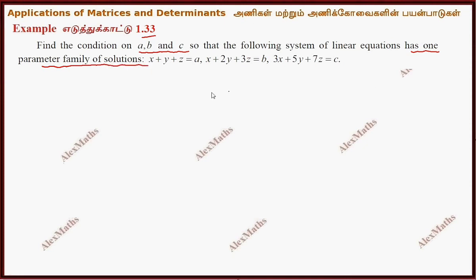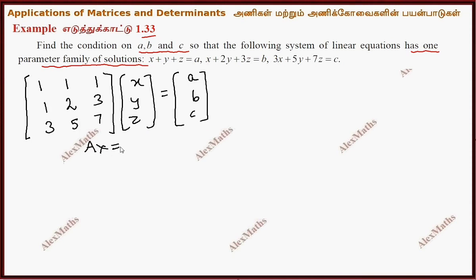This is the matrix product. First, the coefficient of XYZ is the matrix: 1, 1, 1; 1, 2, 3; 3, 5, 7. XYZ is the variable matrix, multiply the matrix. Here are constants A, B, C. This is the formula.